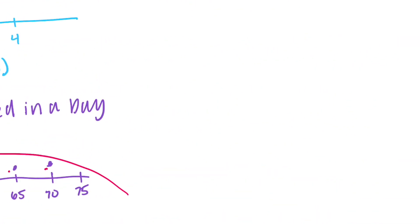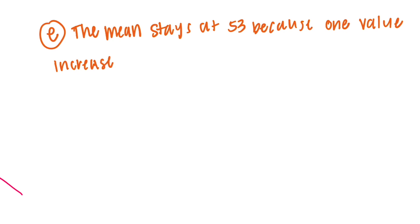So let's say for E, the first one. Let's say the mean stays at 53 because one value increased by 5, but the other decreased by 5. So the balance does not change.